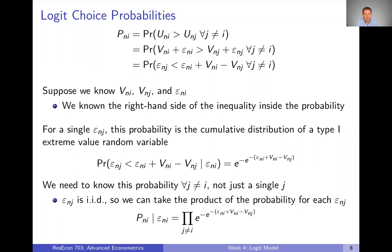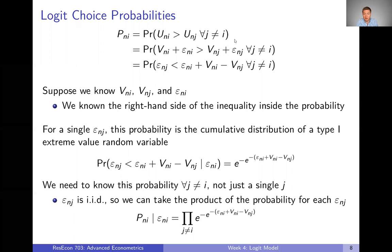Let's remind ourselves and redefine choice probability. That's the probability that a decision maker is going to choose any particular alternative. Because we have this random utility term, we can't say for certain which alternative a decision maker is going to choose, but we can say what the probability is of them choosing each alternative. Capital P sub NI is the probability that decision maker N chooses alternative I — that's the probability that I gives more utility than every other alternative.